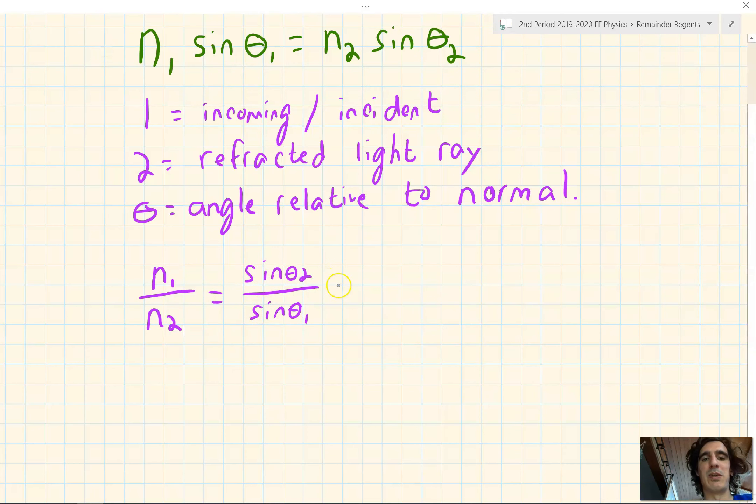We saw from the previous video that the index of refraction is equal to c over v. So n₁ will turn into c over v₁ over n₂ turns into c over v₂. In this case, we can see that c, the speed of light in a vacuum, cancels out. So we're left with 1 over v₁ over 1 over v₂. If we do some laws of division, fractions, that simplifies to v₂ over v₁.